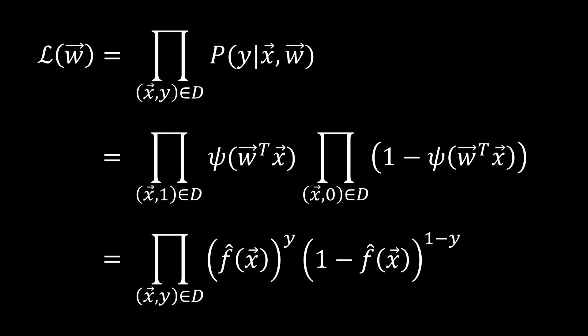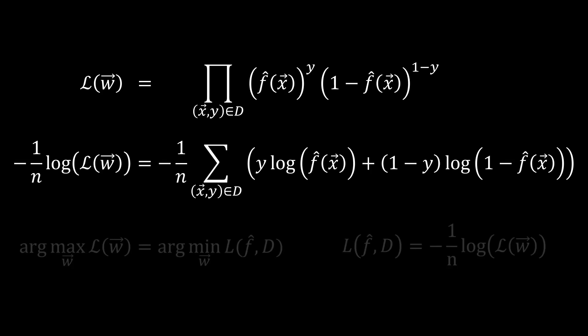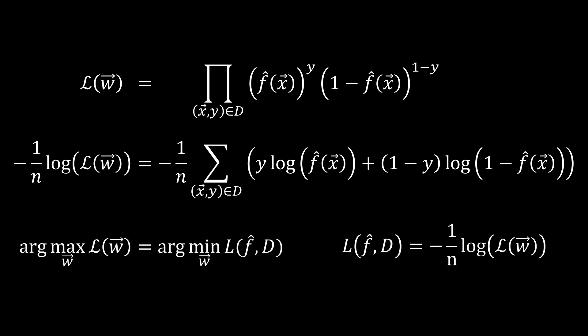Note that if we maximize this quantity, we maximize the likelihood of a correct prediction of the outputs based on a corresponding input. Since maximizing a product is cumbersome in practice, let us take the logarithm on both sides to turn the product into a sum. Note that this logarithm does not change the optimal value. Also, multiplying by a positive constant does not change the optimum, so let's divide by the dataset size n to get the average over the dataset. Finally, let's multiply by minus 1 to change the maximization into a minimization. The argmax of the likelihood function is equivalent to the argmin of the negative average log likelihood. This derived formula is referred to as logistic regression loss, or log loss in short.